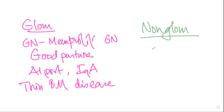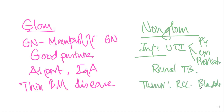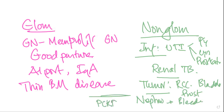For non-glomerular hematuria, common causes include infections and inflammations such as UTI — upper UTI (pyelonephritis) or lower UTI (cystitis) — as well as prostatitis and renal TB. Tumors such as RCC, bladder tumor, and prostatic carcinoma are also causes. Additionally, bleeding disorders, nephrolithiasis, and PCKD can cause both glomerular and non-glomerular hematuria.